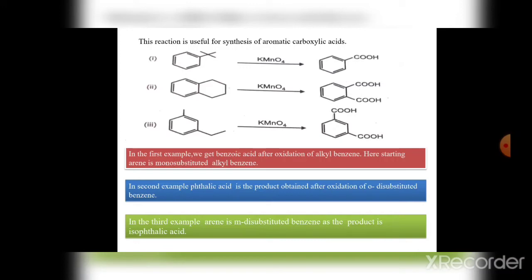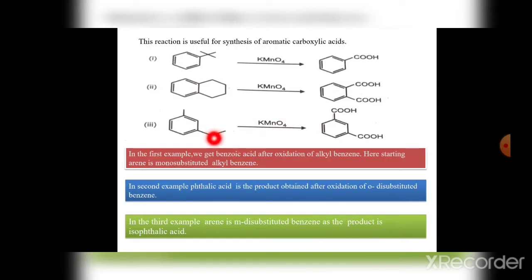Here is a simple trick: benzene containing one substituent on treatment with KMnO₄ gives one –COOH group. If it is disubstituted we get two –COOH groups. For ortho (1,2 position) or meta (1,3 position) disubstituted benzene, we again get two –COOH groups.